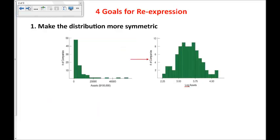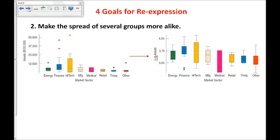Here are four goals for re-expression, both univariate meaning one variable data and bivariate meaning two variable data. One is to make the distribution more symmetric. We could take the log of the y variable, and that would give us a more symmetric distribution. We could make the spread of several groups more alike. Again, we take the log of the y variable here. And we do have more similar spreads throughout them, so we can now discuss which one seems different than the others.